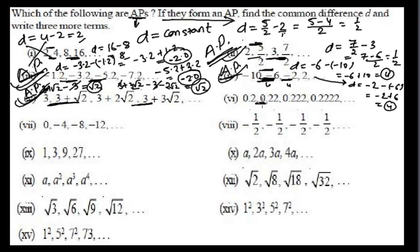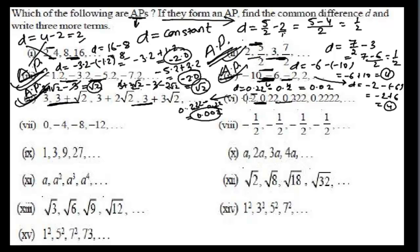The sequence is 0.2, 0.22, 0.222, 0.2222. The first common difference is 0.22 minus 0.2 equals 0.02. Checking: 0.222 minus 0.22 equals 0.002. Since we get different common differences (0.02 vs 0.002), this is not an arithmetic progression.